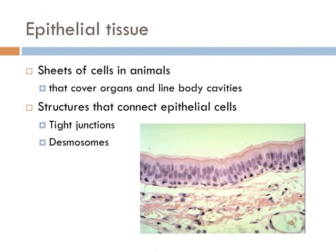A middle lamella-like layer made of gelatinous polysaccharides exists between cells of many animal tissues. The polysaccharide glue may be reinforced by cable-like proteins that span the ECM to connect adjacent cells. This is really important in epithelial tissues. Epithelial tissues are composed of sheets of cells that cover organs and line body cavities. Many types of structures connecting neighboring epithelial cells include tight junctions and desmosomes.